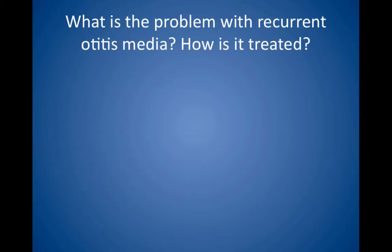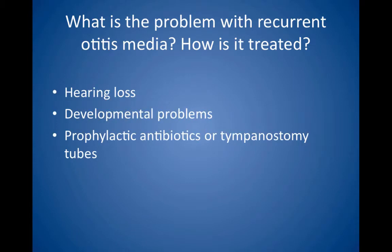What is a problem with recurrent otitis media? How is it treated? Recurrent otitis media is a common pediatric problem, along with prolonged secretory otitis, a result of incompletely resolved otitis media, and can cause hearing loss with resultant developmental problems such as speech and cognitive functions. Treat with prophylactic antibiotics or tympanostomy tubes. Adenoidectomy is controversial but may help in some cases, as it is thought to help prevent blockage of the eustachian tubes.